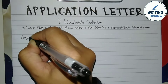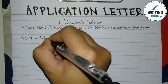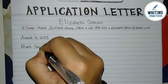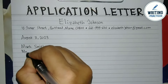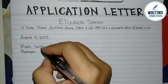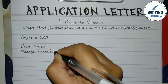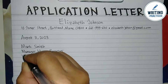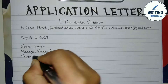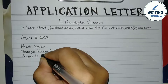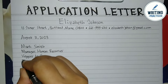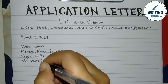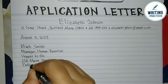And then, write the date today — it is the date you write the letter. For the next, write the recipient's full name, the title or position in the company, and the company name. You can continue by writing the address of the company or the office. Write also the city, state, and the zip code.